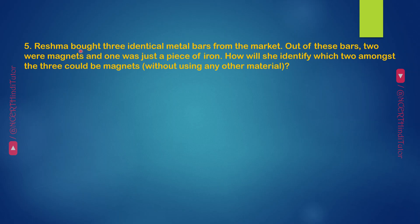Question 5: Reshma bought three identical metal bars from the market. Out of these bars, two were magnets and one was just a piece of iron. How will she identify which two amongst the three could be magnets, without using any other material?